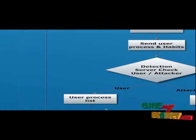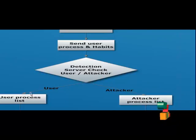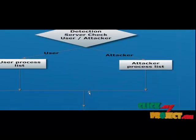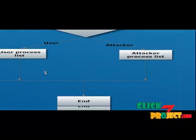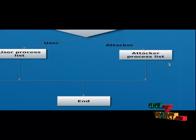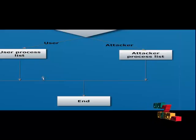The deduction server finds who is the attacker by checking the user process list and the attacking process list. The user normal process list is compared against the attacker process list. This is the habit file compared against attacking files.